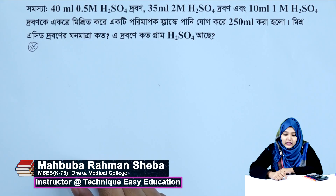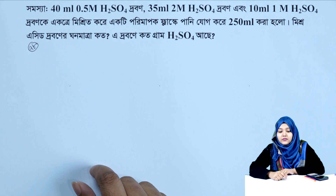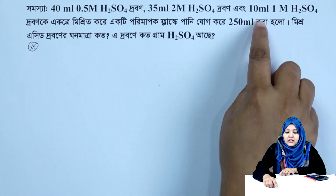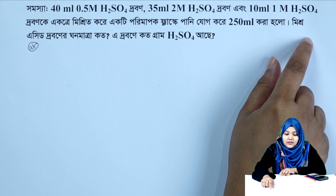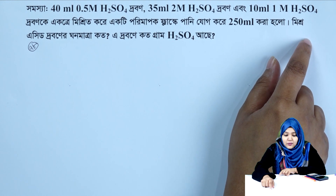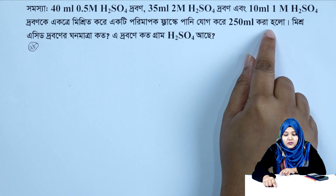I'm going to show you how to work with three sulfuric acid drops: 40 ml of 0.5 molar sulfuric acid, 35 ml of 2 molar sulfuric acid, and 10 ml of 1 molar sulfuric acid. I'm going to show you how to prepare a 250 ml solution.